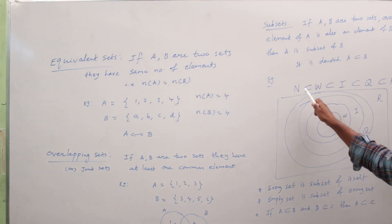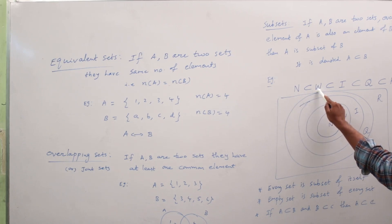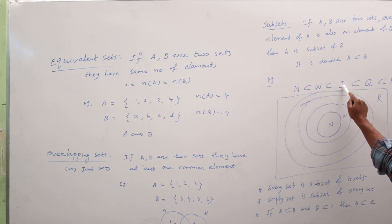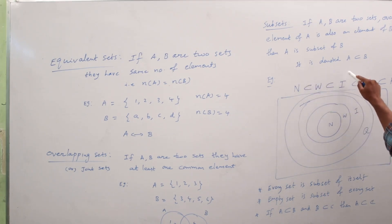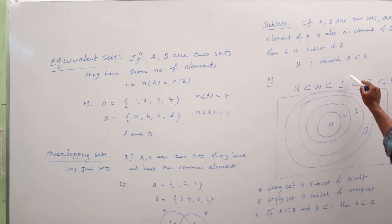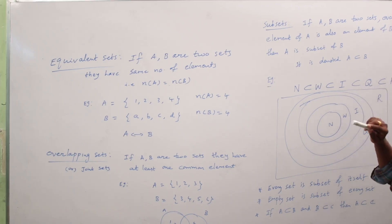For example, natural numbers are a subset of whole numbers, and whole numbers are a subset of integers, so natural numbers are also a subset of integers. Similarly, whole numbers are a subset of integers, and integers are a subset of real numbers, so whole numbers are a subset of real numbers.